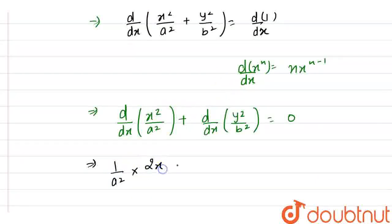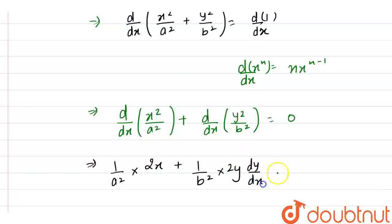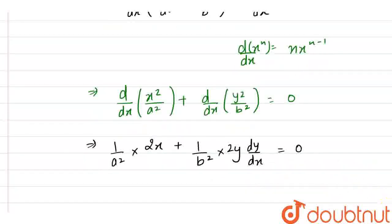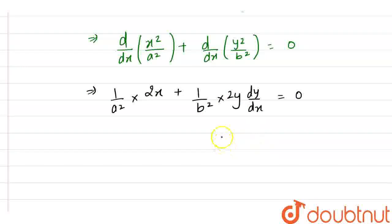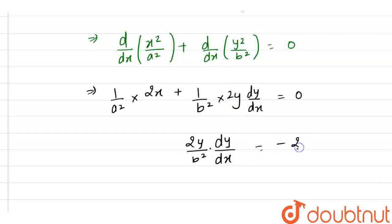So we get 1 by a squared into 2x, plus here 1 by b squared is constant so it stays as 1 by b squared, and differentiation of y squared with respect to x is twice of y dy by dx by using chain rule. This equals to zero. So if we solve further, we have 2y by b squared into dy by dx equals minus of 2 by a squared into x.